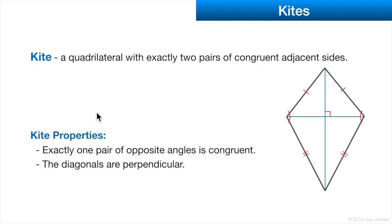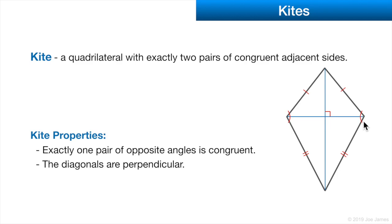A kite is a quadrilateral with exactly two pairs of congruent adjacent sides. It meets the requirements for a quadrilateral — a four-sided, closed figure. What makes it a kite is that two sides are longer than the other two. The two long sides touch each other, and the two shorter sides also join. One property: exactly one pair of opposite angles is congruent — the angles where one long and one short side meet are congruent to each other.